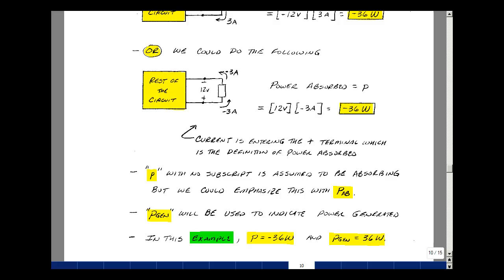In the course, we're going to use a lowercase p with no subscript to indicate power absorbed. You could also emphasize it by putting a subscript AB on it, and I'll occasionally do that. Our textbook uses only a definition of power absorbed, but it's sometimes convenient to actually talk about power generated, especially when you're dealing with sources.